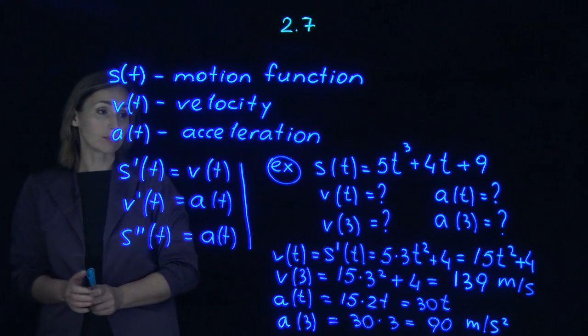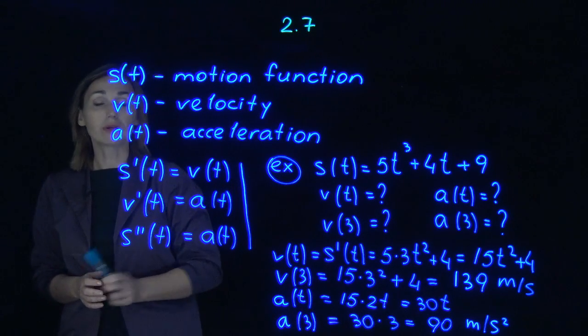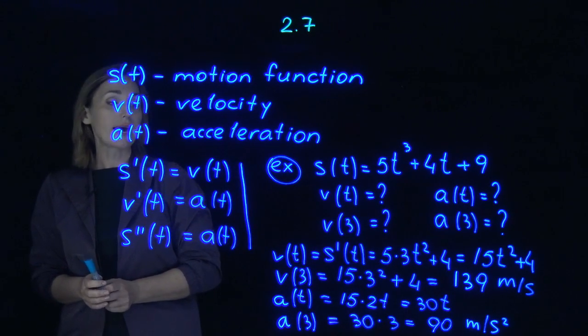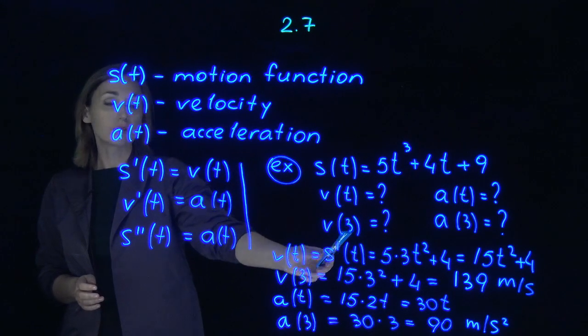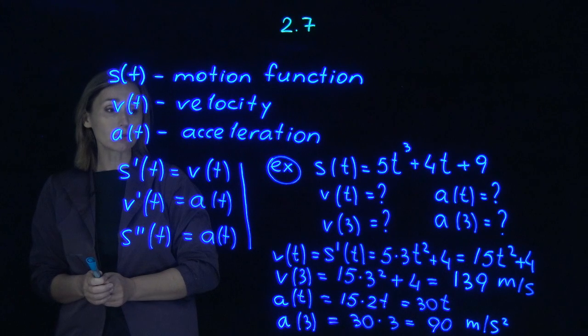Now here is the example. Given a function, a motion function, you need to find velocity function, acceleration function, velocity at the point t equals 3, and acceleration at the point t equals 3. So let's do it.